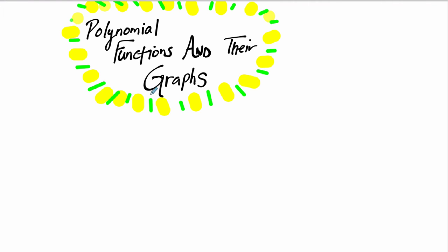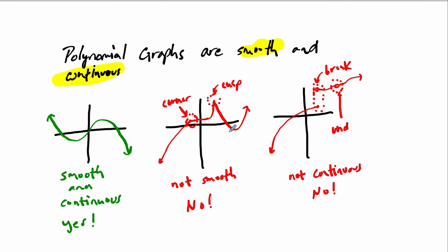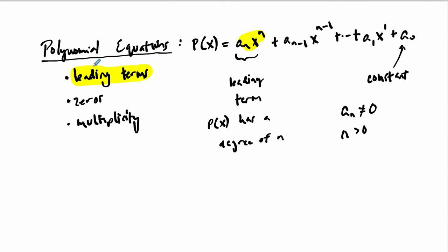Welcome to part three of polynomial functions and their graphs. In part one we talked about the characteristics of a polynomial graph and the importance of leading terms — how it tells you the end behavior. In part two we proved algebraically that any two polynomials of the same degree have the same end behavior. Now we're going to look at the importance of both the real zeros of a polynomial function and the multiplicity of the factors.